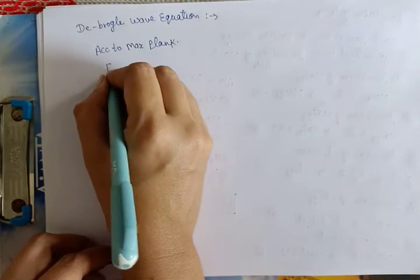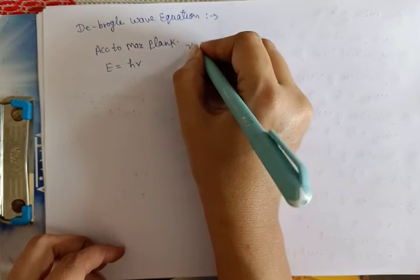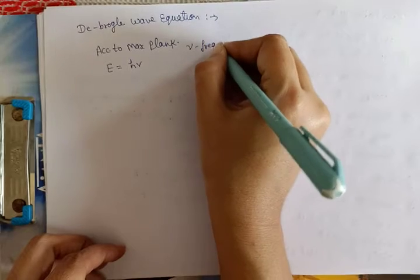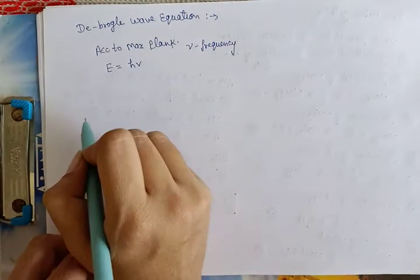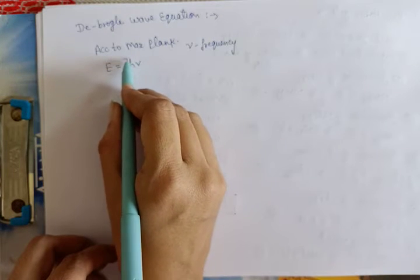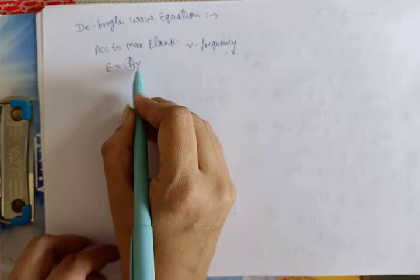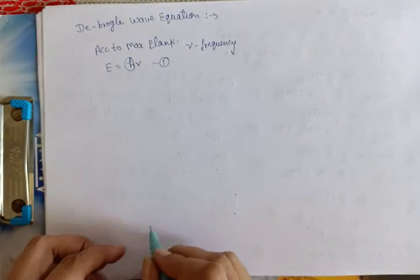energy E equal to H nu - جب radiations nu frequency سے move کرتی ہیں تو ان کی energy ہوگی E equal to H nu جہاں H جو ہے Planck constant ہے اور nu frequency ہے equation number one۔